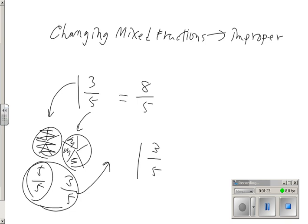and I could add 3 more fifths and get 8 fifths, or I could simply follow this rule. Take your denominator and multiply it by the whole number. That will tell you how many fifths there are. So 5 times 1 is 5 fifths, plus 3 more fifths gives me 8,